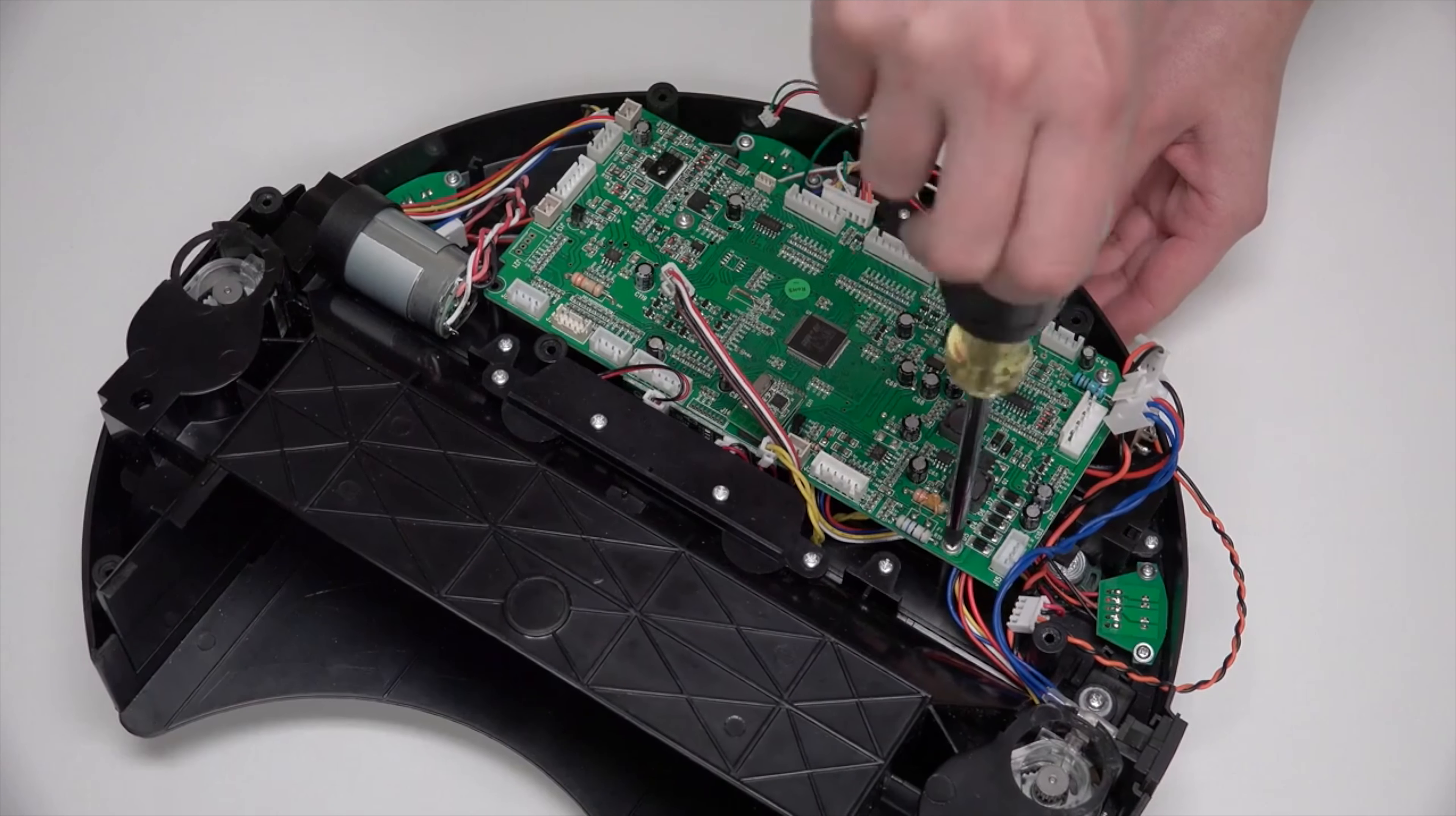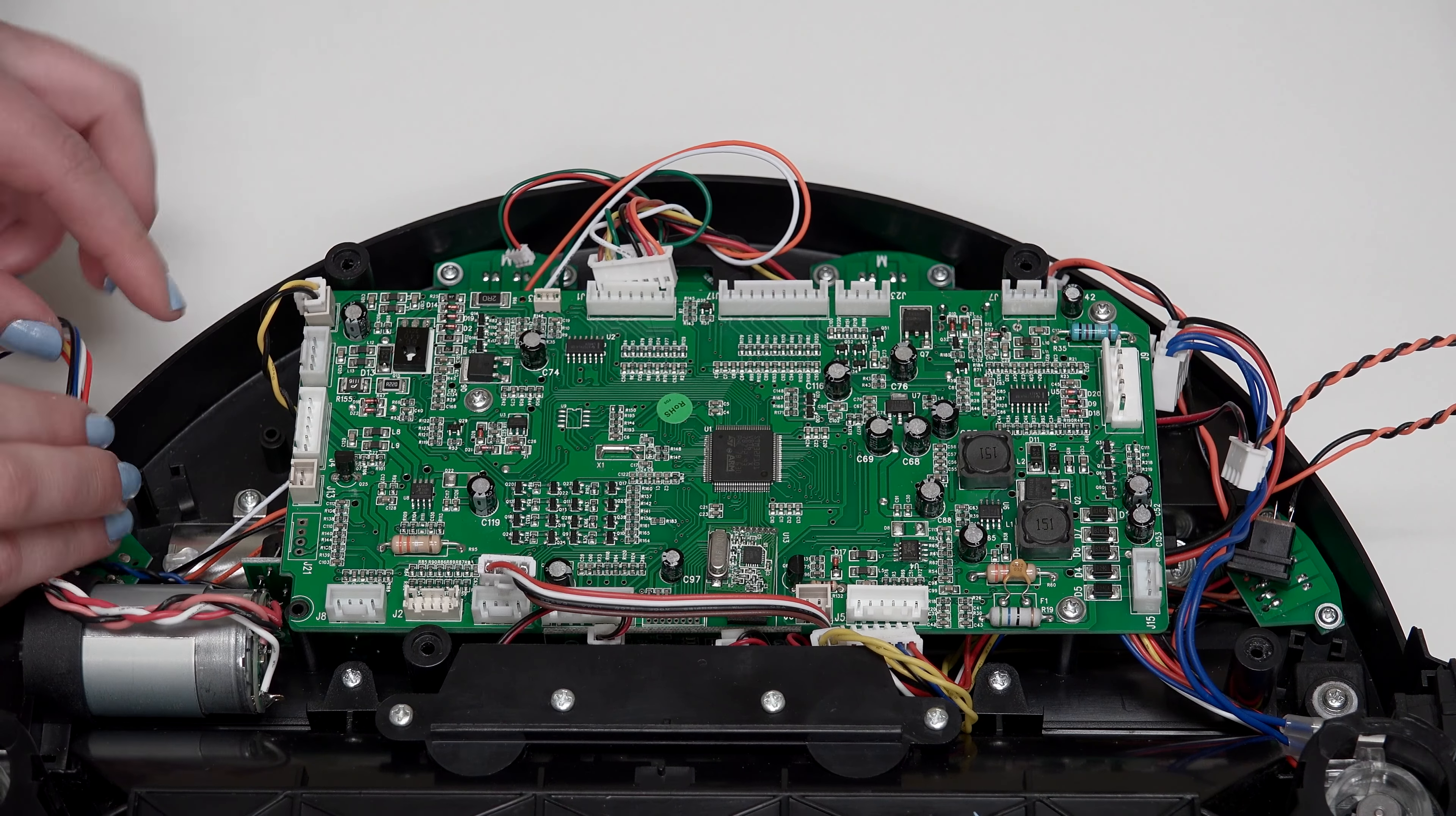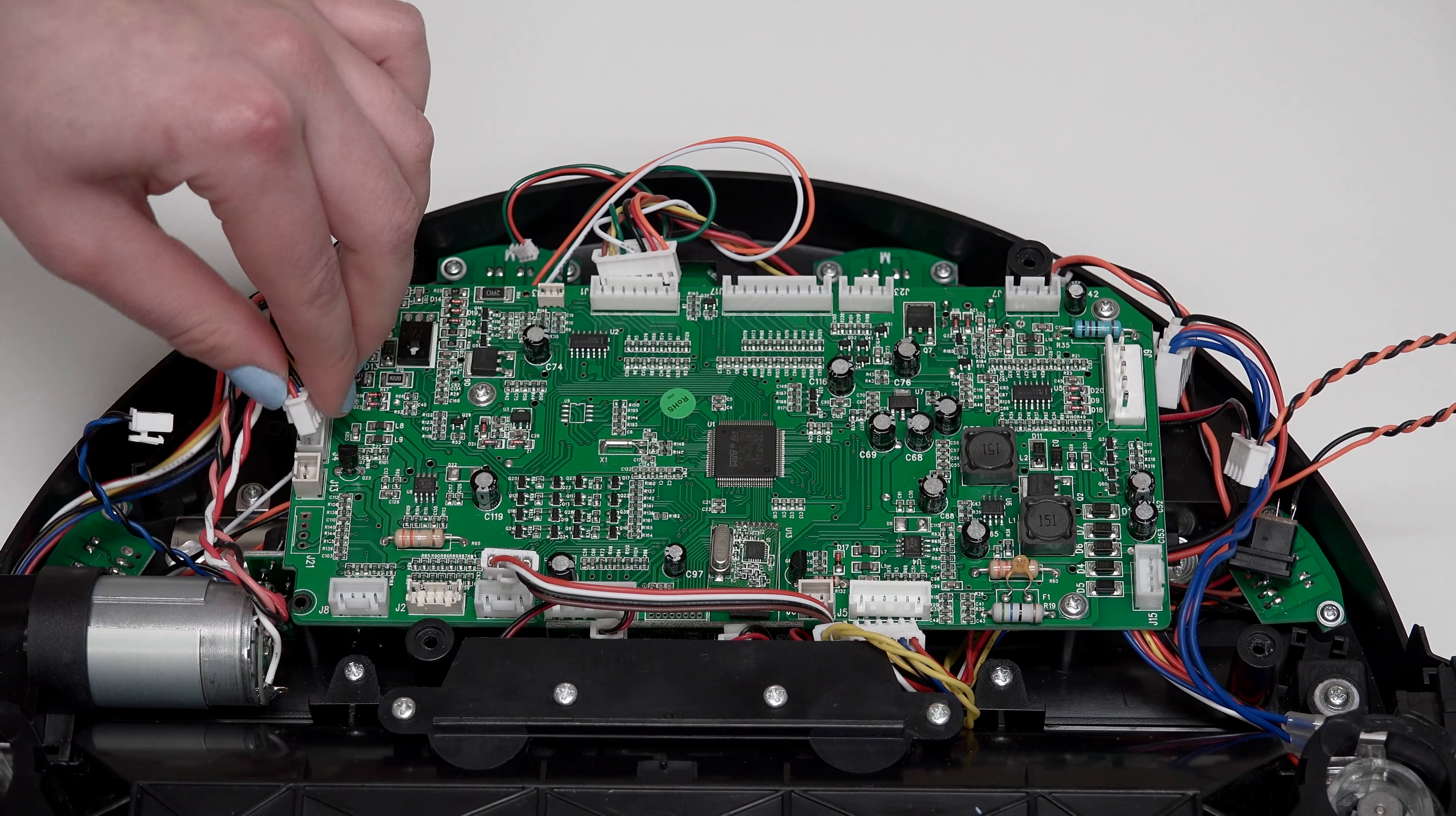Now reconnect all the circuit plugs correctly. The order of plugs on the left side of the mainboard, from top to bottom, is a small plug with black and yellow wires, a plug with two pairs of twisted wires, a plug with multicolored wires for Bob's left wheel, and a plug with blue and black wires.